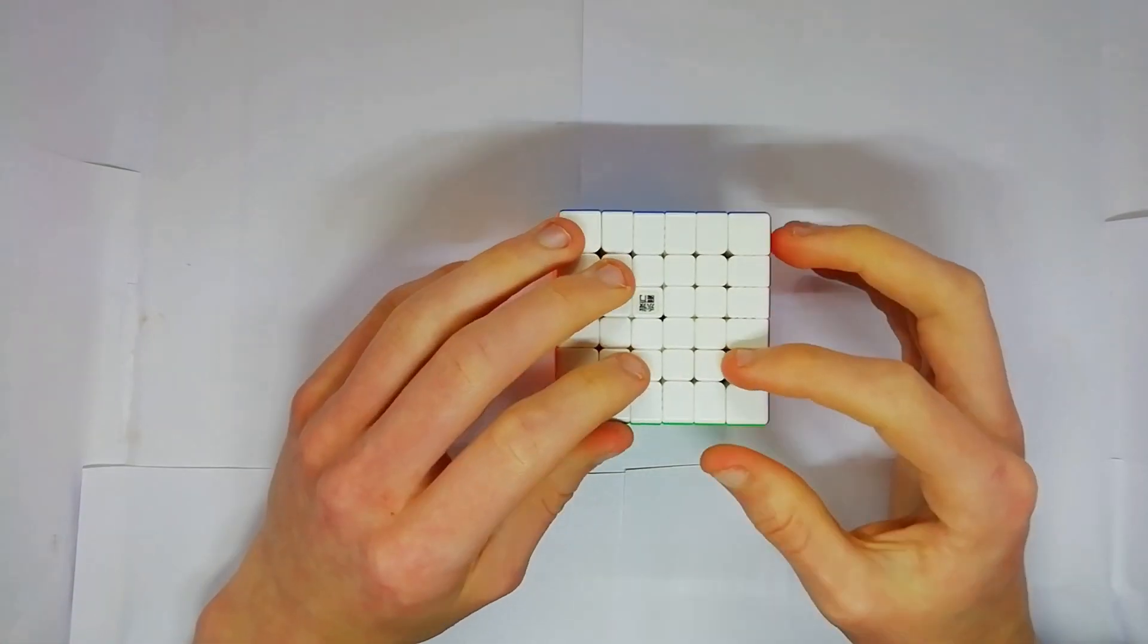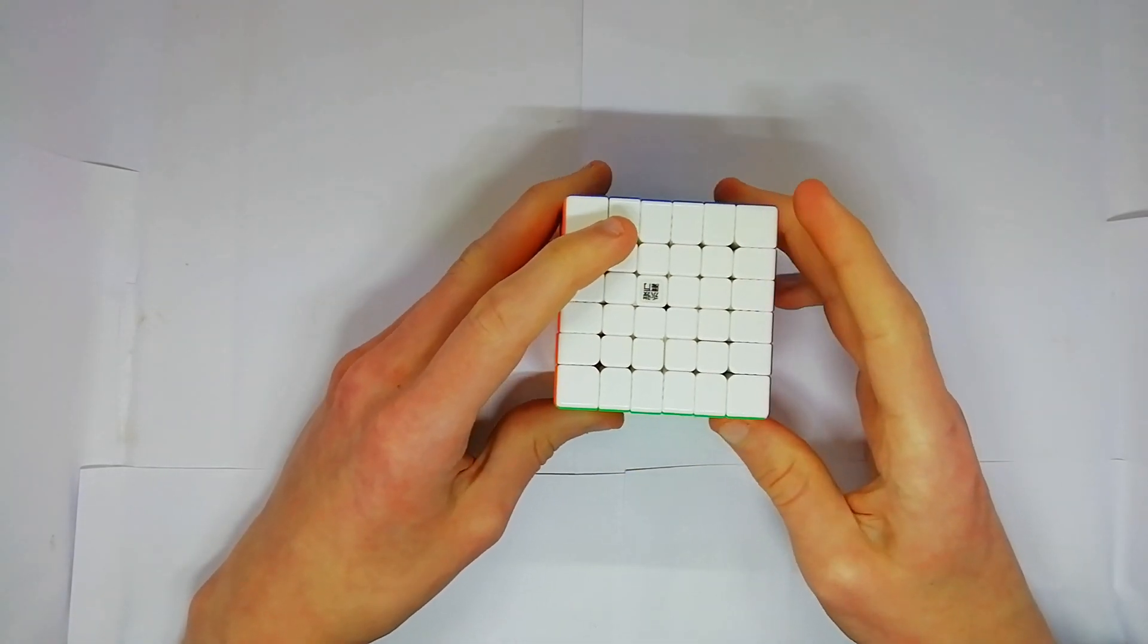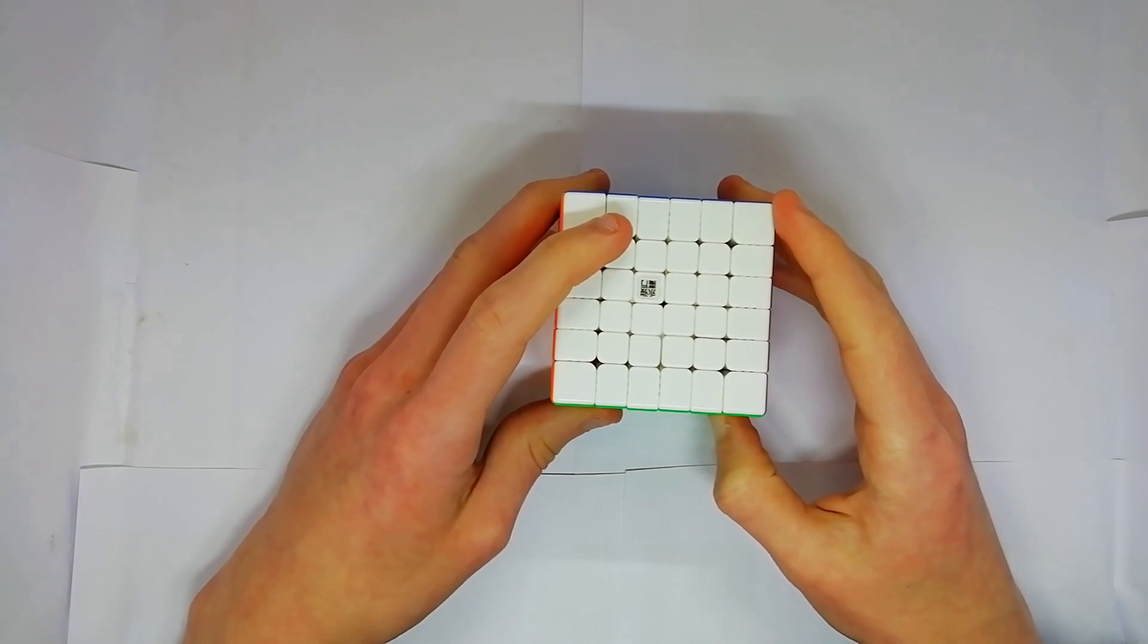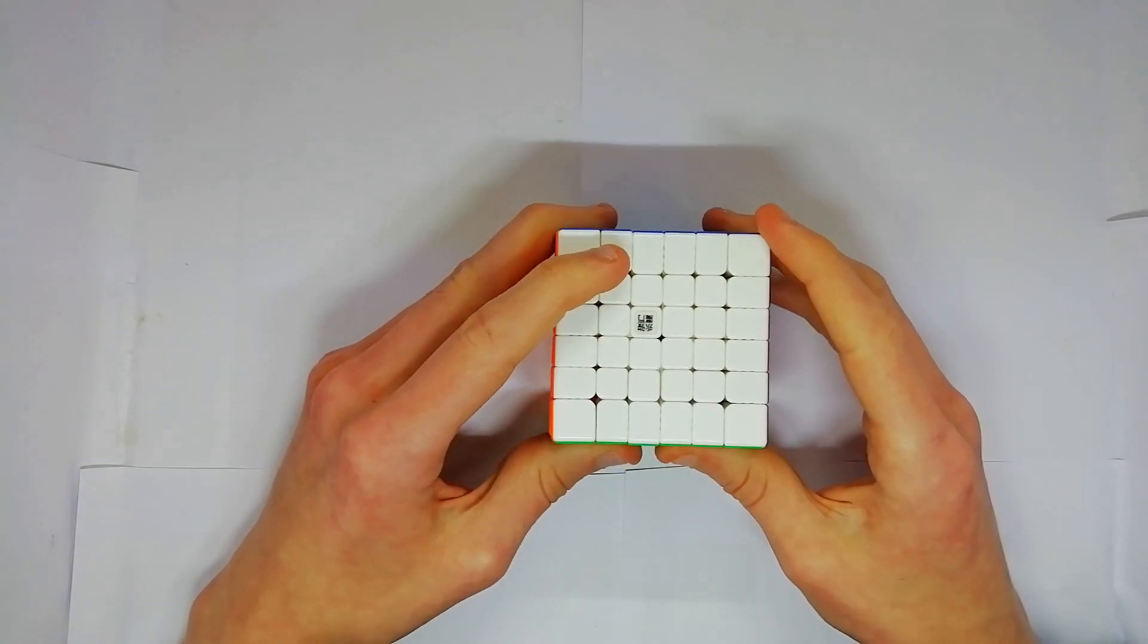Pretty much all 6x6s do it if you're rough with it, but if you're a beginner on a low budget wanting a 6x6, you really don't want it to pop because it's quite annoying to put back together. I mean, it's possible, but it's annoying.